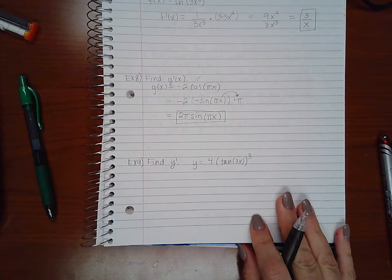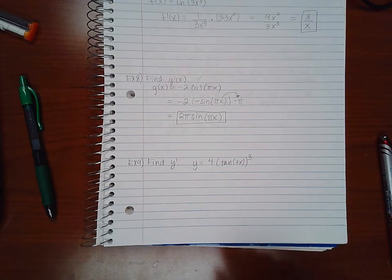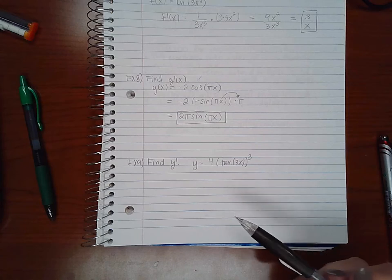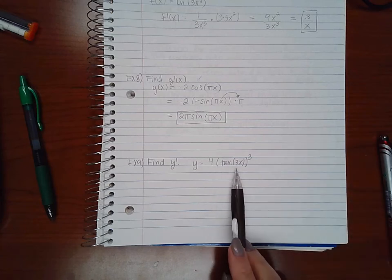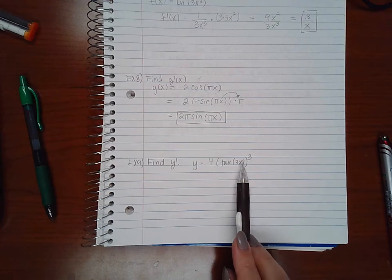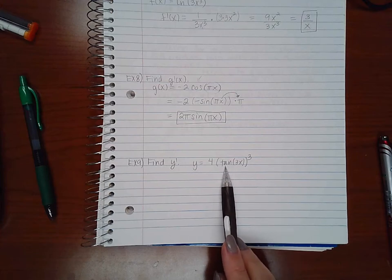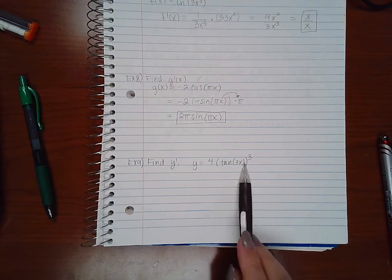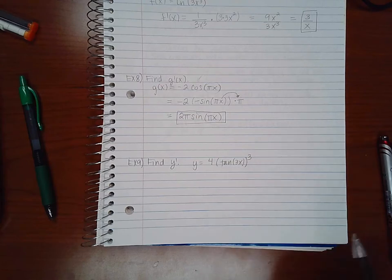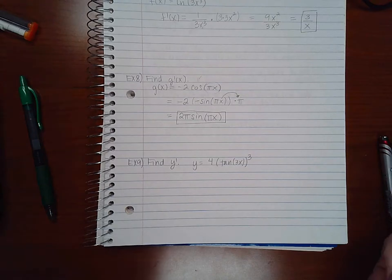Another example here. Now this one's a little bit more complicated because I have two inner functions, so I'm probably going to have a double linked chain. This 3x angle is an inner function to my tangent function, but the whole tangent is an inner function to my x cubed function. So you see how you've got a double inner function there.